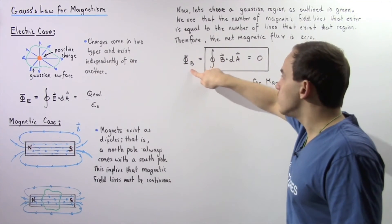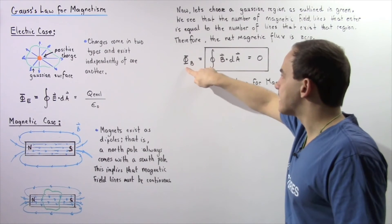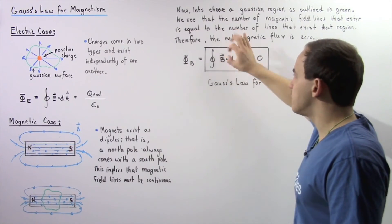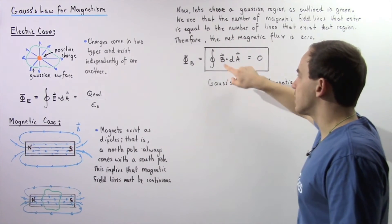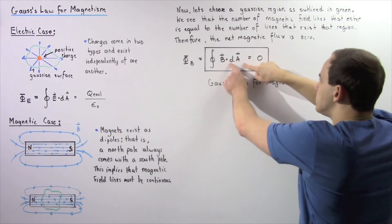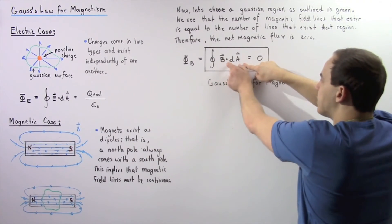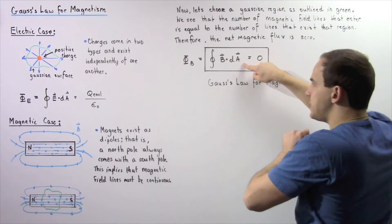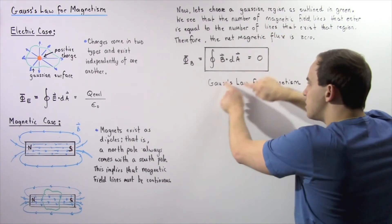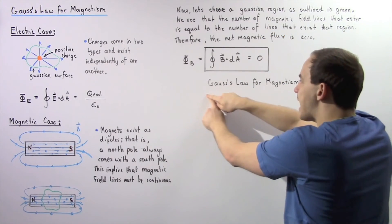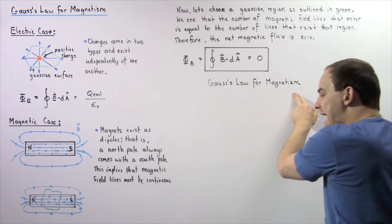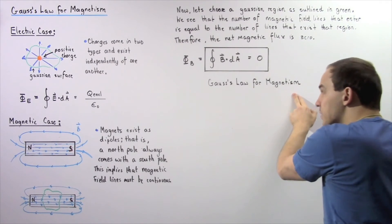Our net magnetic flux is equal to the closed integral of the dot product of the magnetic field B and our infinitely small area vector dA, and this is equal to zero. This is known as Gauss's Law for Magnetism.